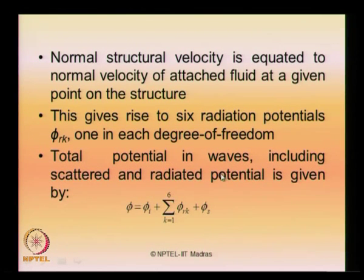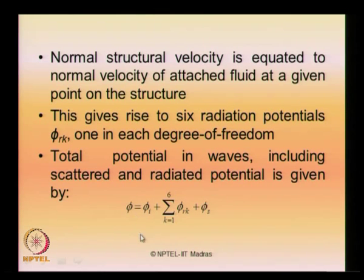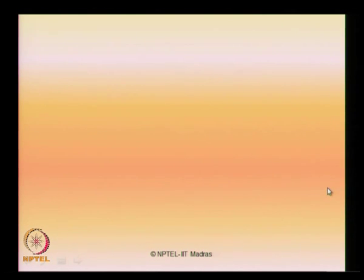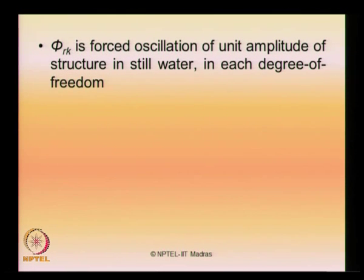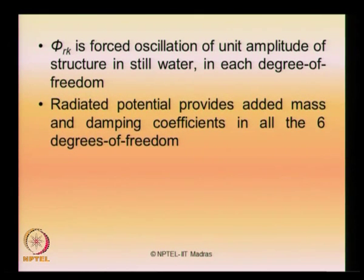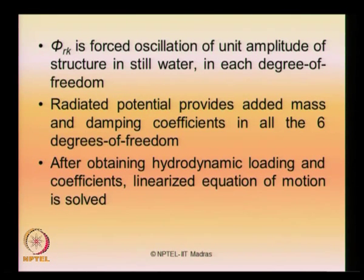The total potential in waves including scattered and radiation potential is given by the summation of phi_i and phi_r_k, where phi_i is the incident wave potential already computed and phi_r_k is obtained from radiation potential. Phi_r_k is the forced oscillation of unit amplitude of the structure in still water in each degree of freedom. The radiated potential provides added mass and damping coefficients in all six degrees of freedom. After obtaining the hydrodynamic loading and coefficients, the linearized equation of motion is solved using numerical or analytical techniques.